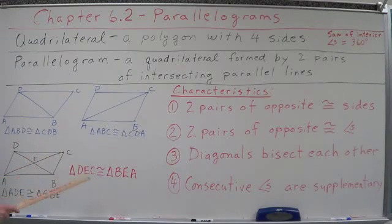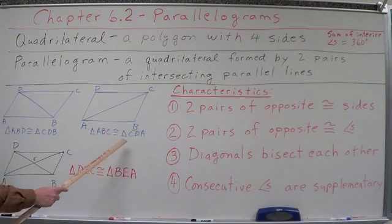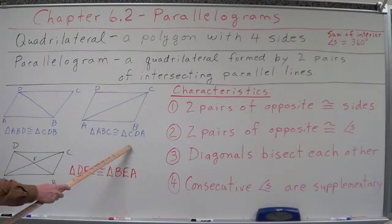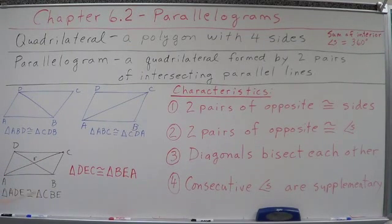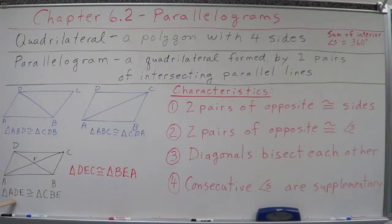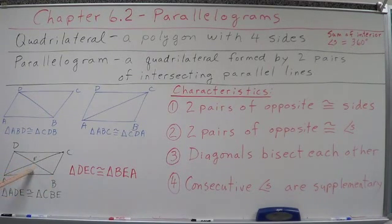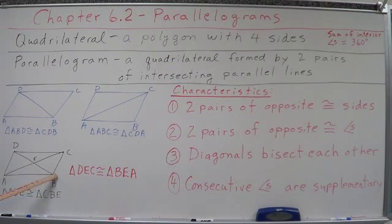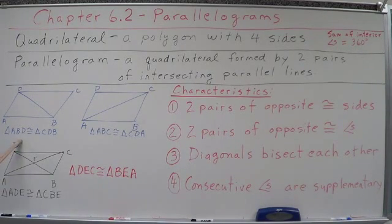Cutting with the other diagonal creates triangle ABC congruent to triangle CDA. Now, cutting with both diagonals and naming the intersection point E gives us triangle ADE congruent to triangle CBE, and triangle DEC congruent to triangle BEA. So when you cut the parallelogram by both diagonals, it creates four pairs of congruent triangles.